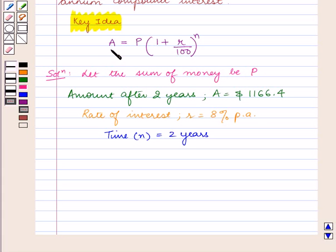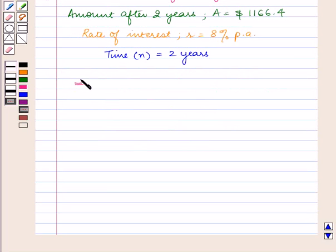As we know, amount A equals P times 1 plus R upon 100 raised to power n. This implies 1166.4 equals P times 1 plus 8 upon 100 raised to power 2.